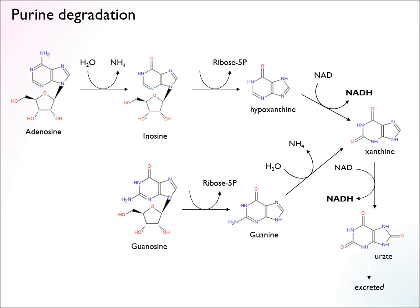If you look at hypoxanthine, there are a couple of places where we can get some energy — a couple of carbons we can actually oxidize. If you work out the oxidation states of these carbons, you can see they're actually kind of equivalent to carboxyl groups. In the first step, we oxidize this particular group and put a double-bonded oxygen on it — that gives us an NADH. In the second step, we oxidize the other group. Now we have arrived at something pretty much as oxidized as it can get — this is called urate or uric acid.